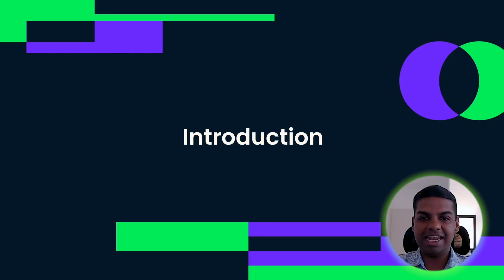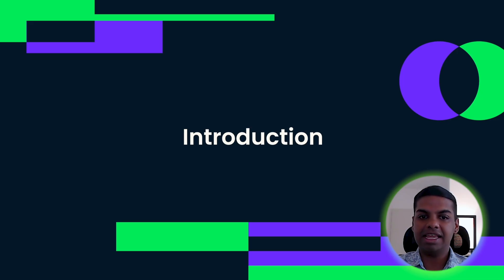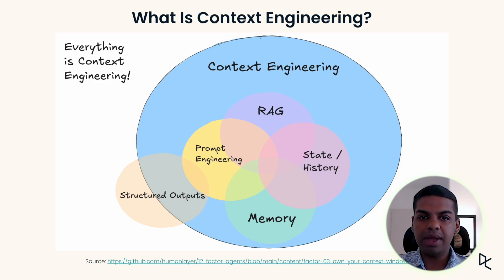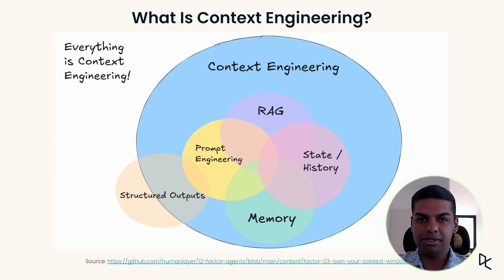If you're just starting out in AI or data science, don't worry. You don't need to be an expert to follow along. Think of this as a guided introduction. We will unpack what context means for AI, why it matters and how you can work effectively with it. Before we go any deeper, let's clarify what we mean by context, especially in the case of language models.